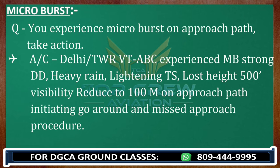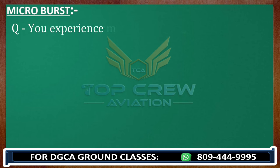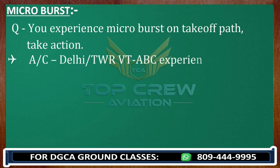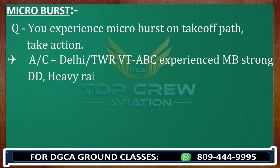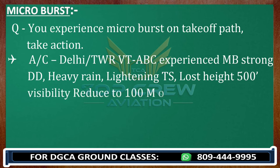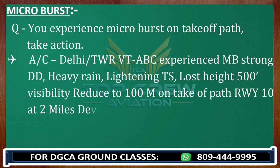For microburst on the takeoff path, the call is: 'Delhi Tower, Victor Tango Foxtrot Bravo Charlie. Experienced microburst. Strong downdraft, heavy rain, lightning, thunderstorm. Lost height 500 feet. Visibility reduced to 100 metres. On takeoff path. Deviating 15 degrees left or 15 degrees right.' These deviation and missed approach actions are pre-selected procedures — ATC does not instruct them.